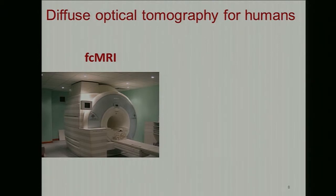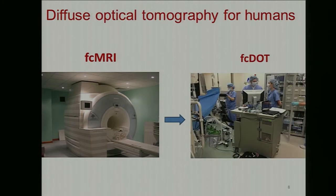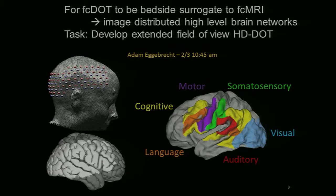FCMRI works quite well, and what we're interested in is taking FCDOT and imaging humans where FCMRI cannot go — for instance, in the operating room or intensive care environments. For FCDOT to be a bedside surrogate to FCMRI, we need to image distributed high-level brain networks. Over the past year, we've been developing an extended field-of-view, high-density DOT system with 92 sources and 96 detectors and over 1,000 measurements, covering about 50% of the accessible cortex. Within that field of view, we can image the visual, somatosensory, motor, and auditory cortices, as well as lateralized language and several cognitive regions.